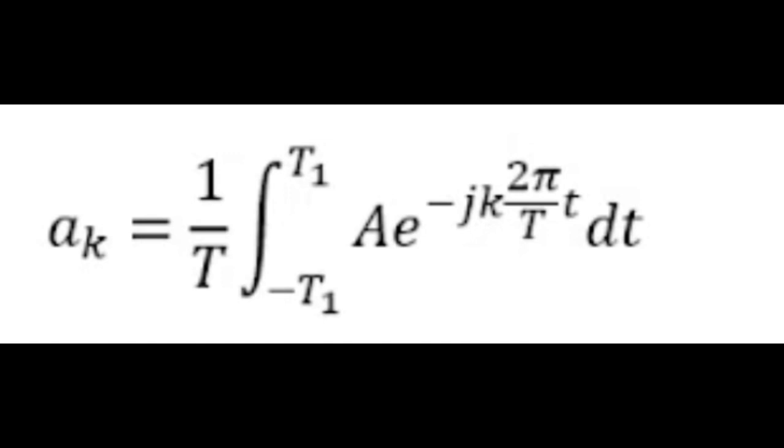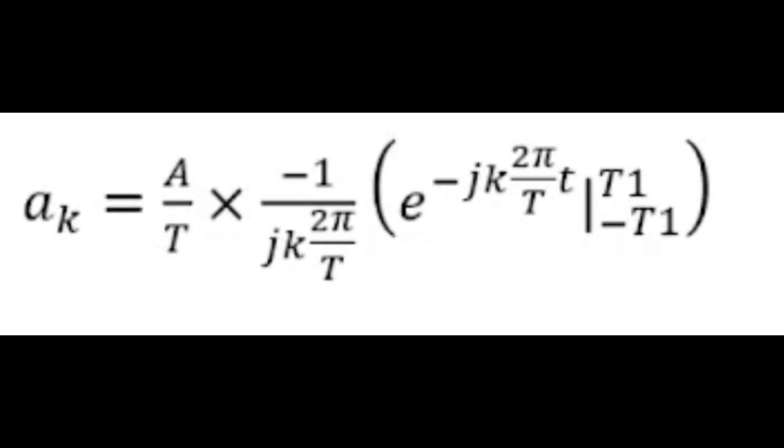Solving for this integration, we obtain this form, where the u-substitution caused constants from the exponents to appear in the denominator. Evaluating t from -T₁ to T₁, we get this following expansion.